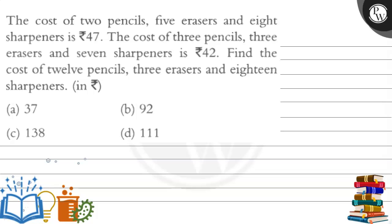Hello, let's read this question. The question says that the cost of 2 pencils, 5 erasers and 8 sharpeners is Rs. 47. The cost of 3 pencils, 3 erasers and 7 sharpeners is Rs. 42. Find the cost of 12 pencils, 3 erasers and 18 sharpeners. Shall we solve this step by step?